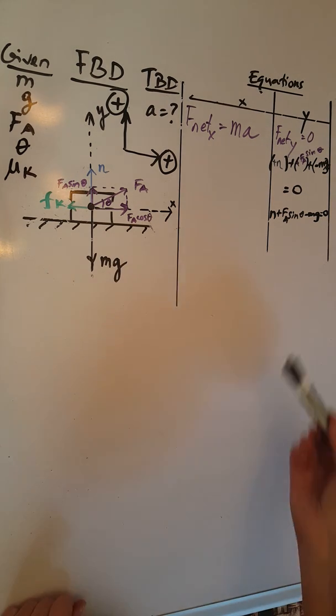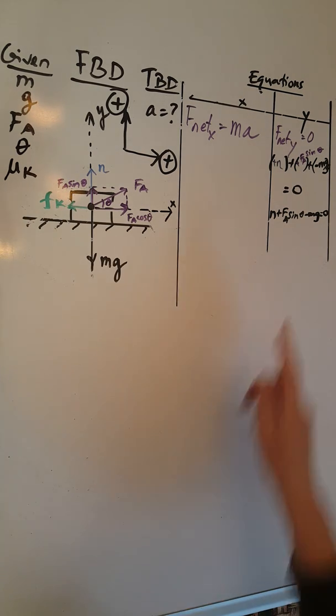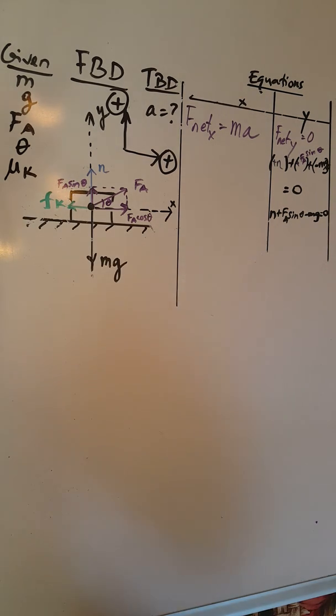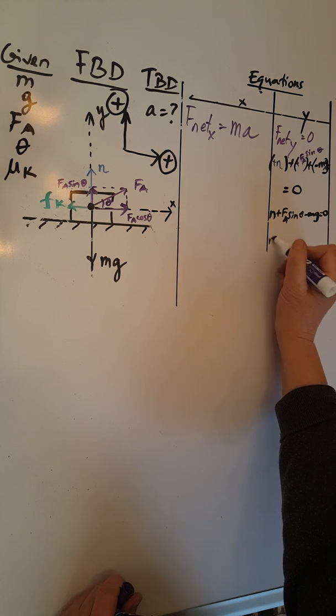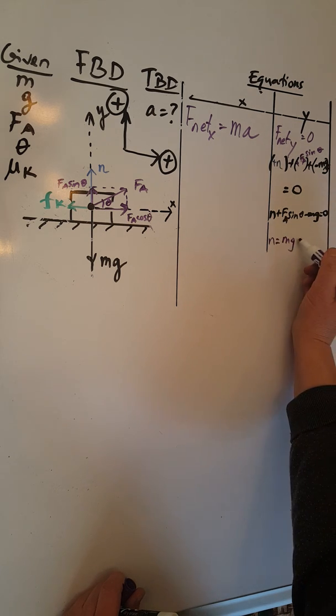In order to solve for the normal force, knowing that I'm going to need it for the force of friction, I am going to isolate N. So N equals Mg minus FA sine theta.